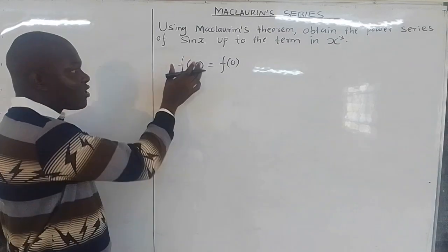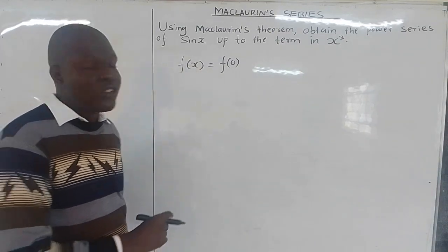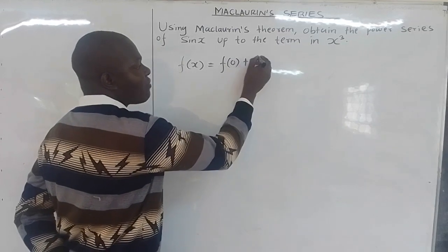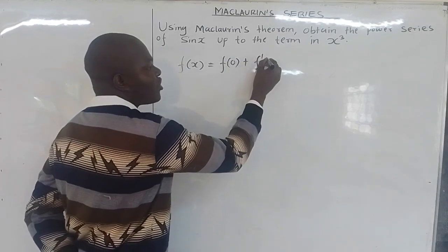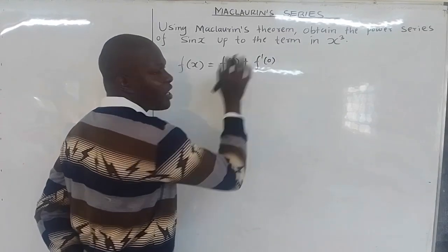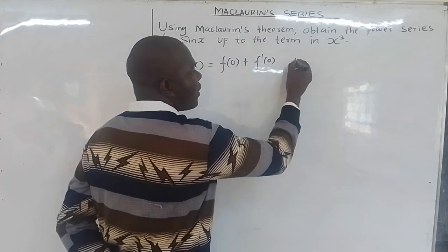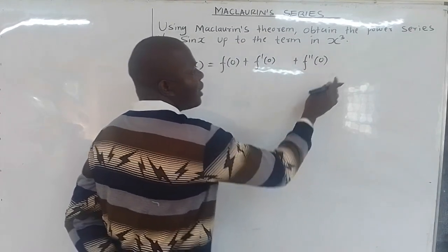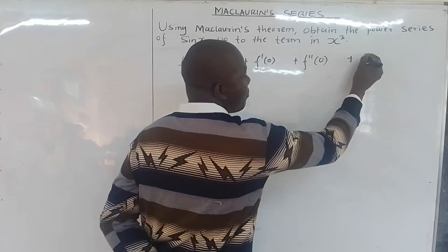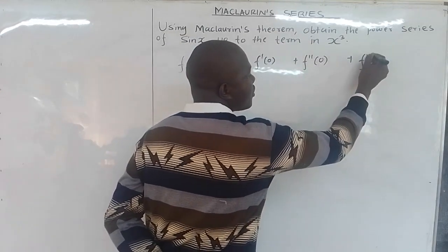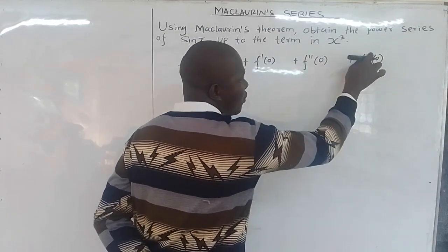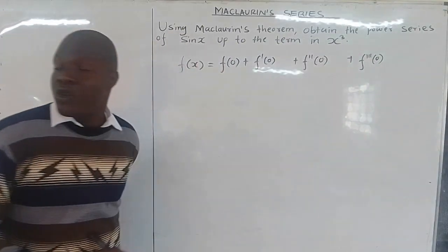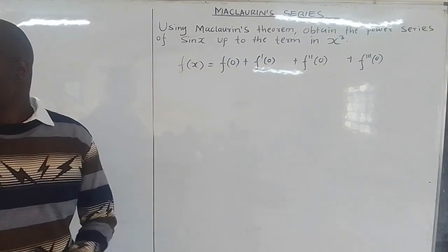When expanding f(x) in the Maclaurin series, you start from f(0). Then you differentiate once to get the next term, leave a space, add a plus, differentiate a second time, leave a space, add a plus, then differentiate a third time. When you reach the triple prime, that's when you get the x cubed term, which is the last term they want us to reach.